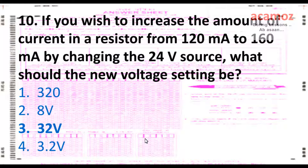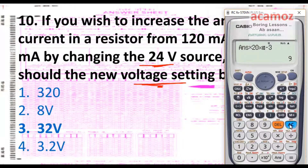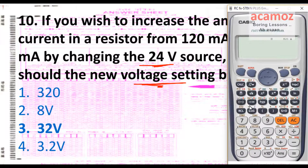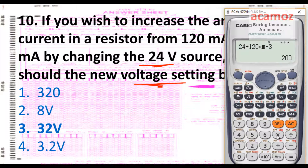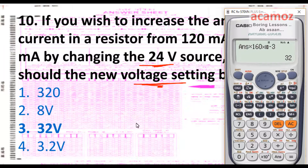If we wish to increase the current in a resistor from 120 milliamperes to 160 milliamperes by changing the 24-volt supply, what is the new voltage? First find the resistance: R = 24 / (120 × 10⁻³) = 200 ohms. Then the new voltage: V = 200 × 160 × 10⁻³ = 32 volts. The new voltage is 32 volts.